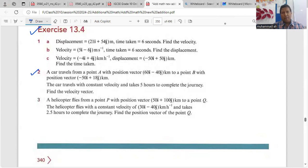A car travels from a point A with position vector 60i minus 40j kilometer to a point B with position vector minus 50i plus 18j kilometer. The car travels with constant velocity and takes 5 hours to complete the journey. Find the velocity vector.